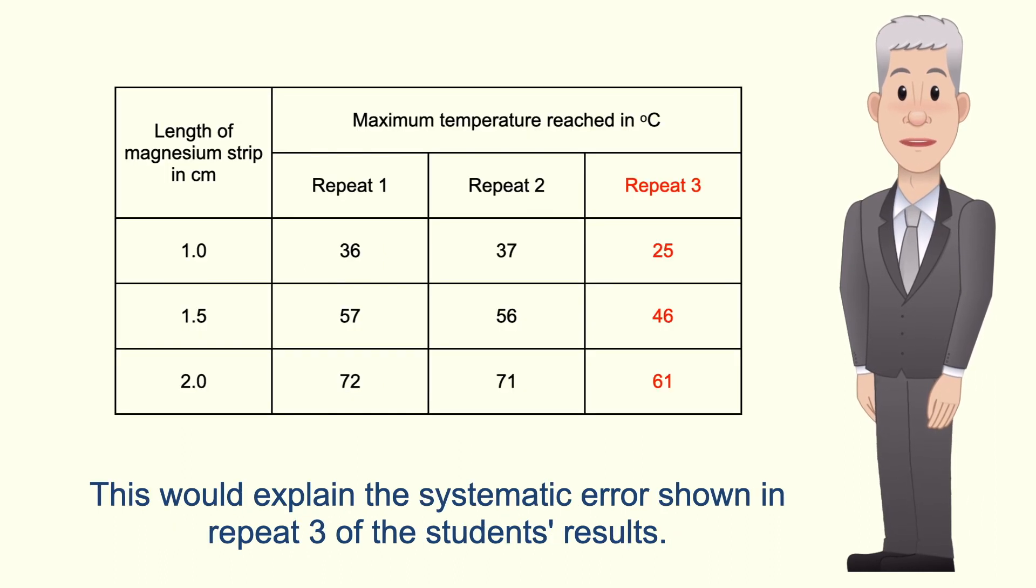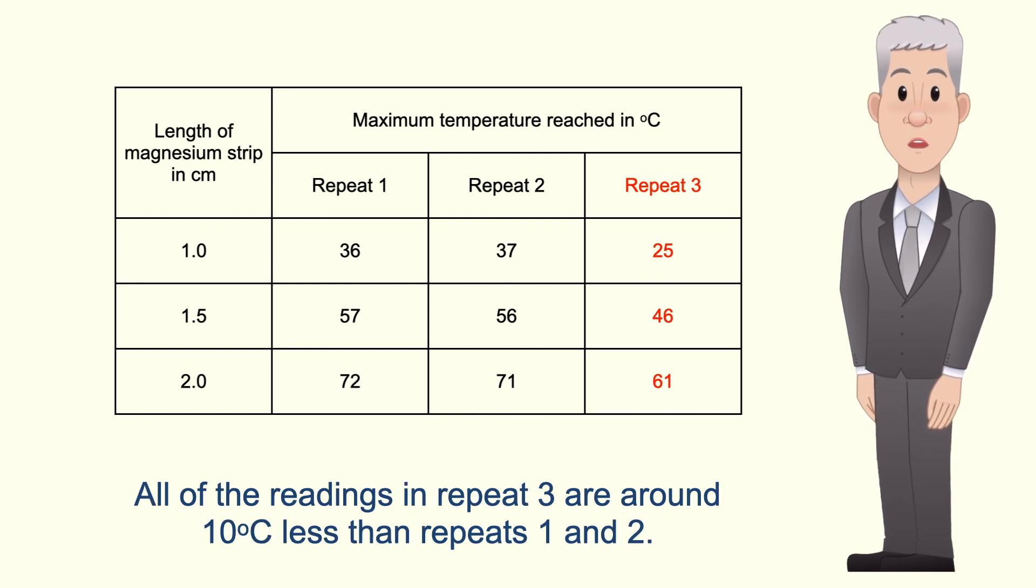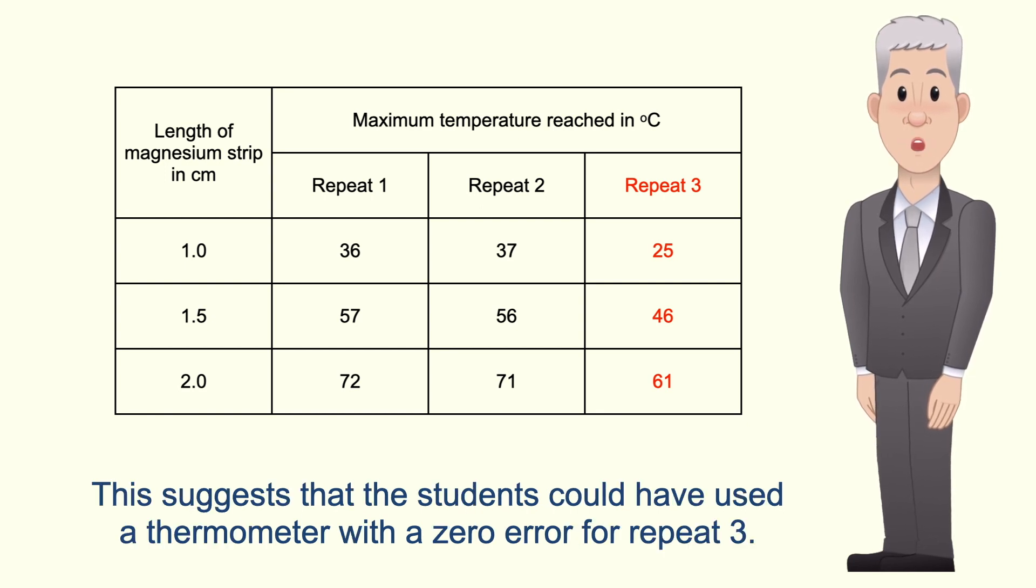And this would explain the systematic error shown in repeat 3 of the students results. All of the readings in repeat 3 are around 10 degrees celsius less than repeats 1 and 2. So this suggests that the students could have used a thermometer with a zero error for repeat 3.